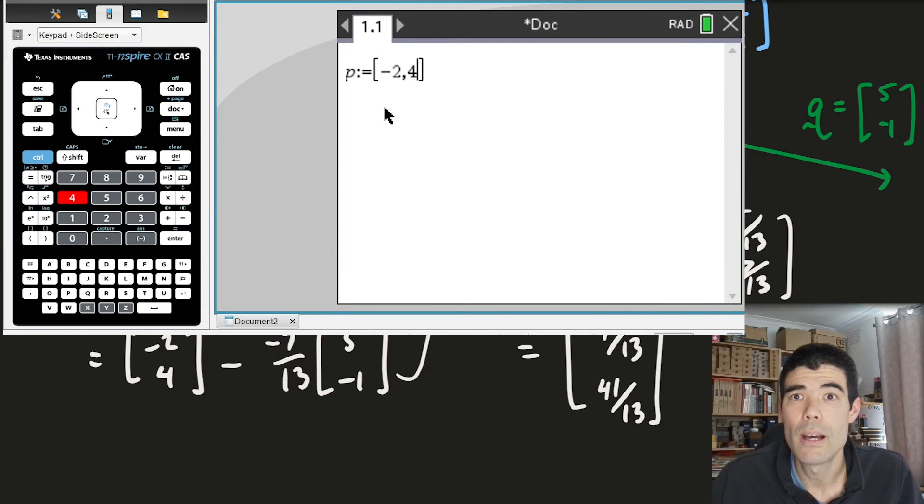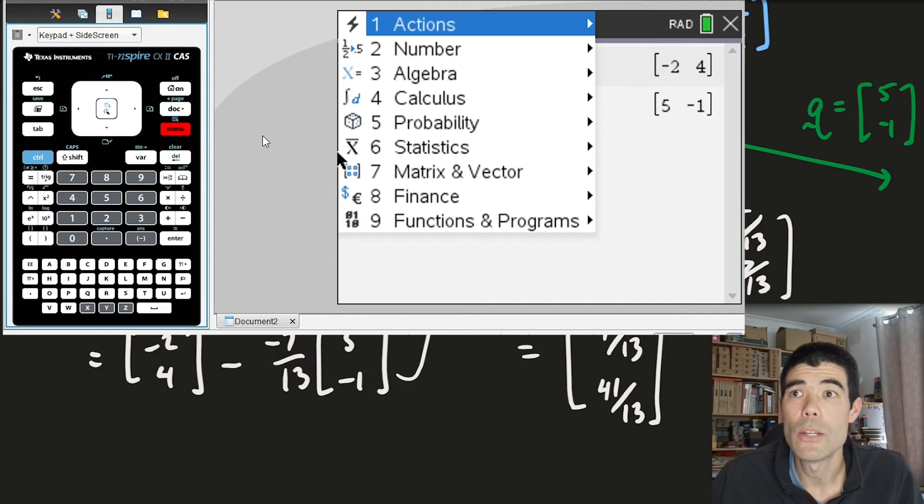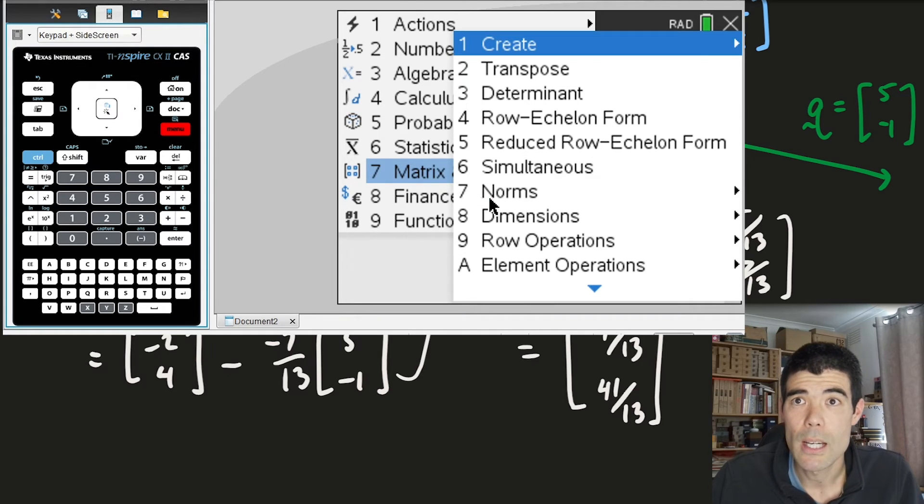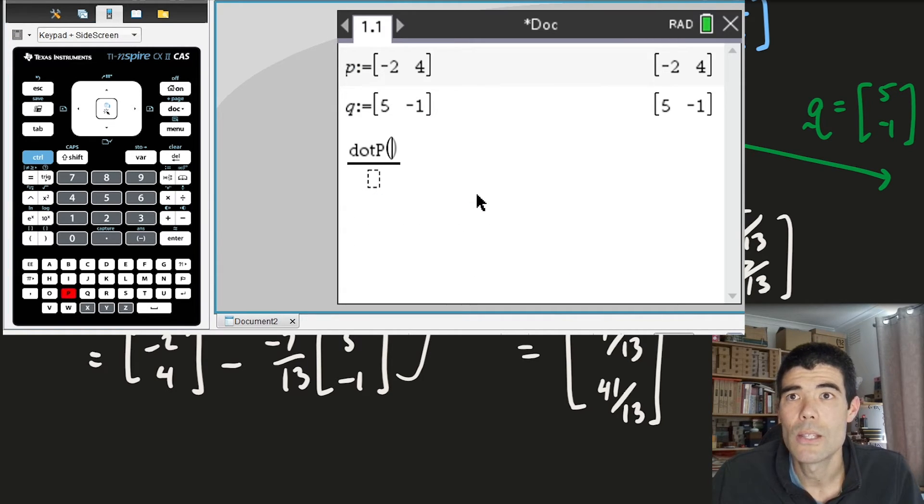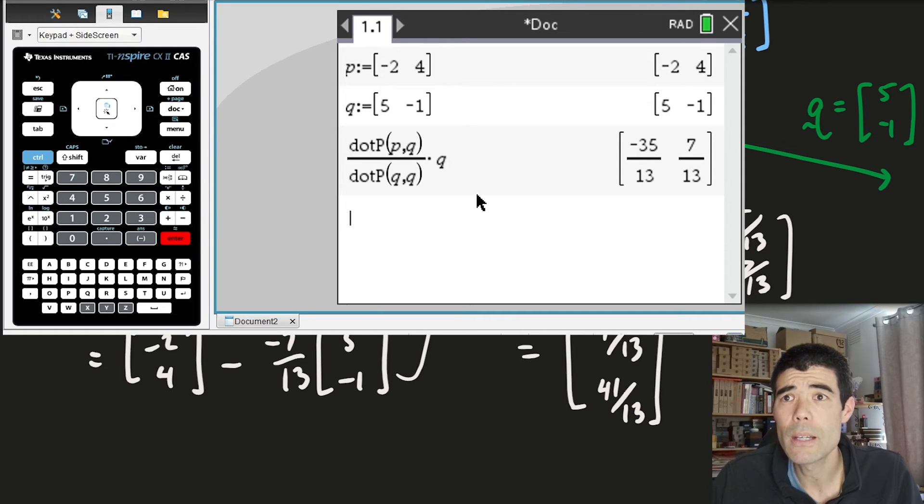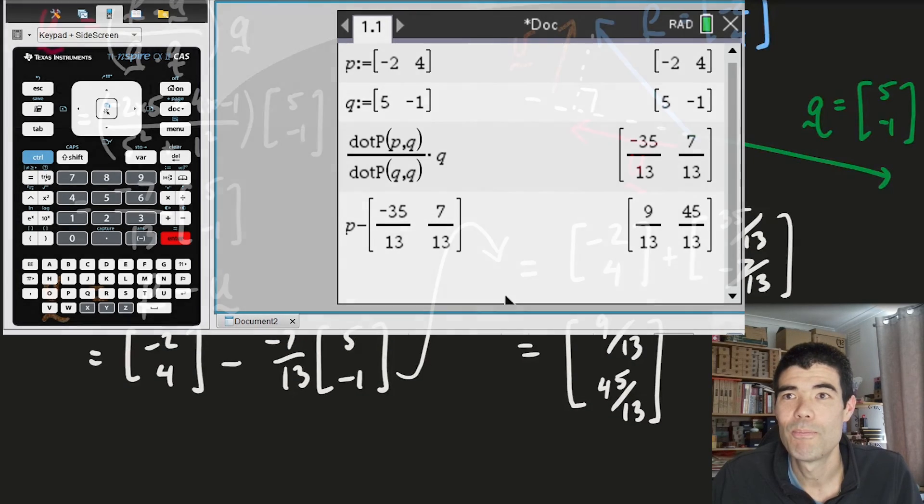Alright, so we can check it on the calculator. This is the TI-Inspire, and it's really nice because we can define the vectors just using negative two comma four to define vector p inside a square bracket and similar for vector q. The dot product command is under menu, Matrix and vector. I've got to scroll down to vectors and the dot product command is there somewhere. We can also just type dot p. So dot p, p comma q, which are the vectors we've defined above. So p dot q over q dot q times vector q. And there it is. That is what we had for the vector projection. For the perpendicular component, we subtract that from p and we get 9 over 13 and 45 over 13. We'd better correct a bit of an arithmetic error there.